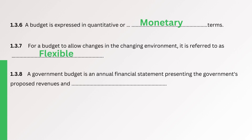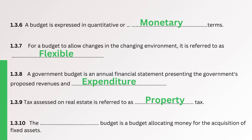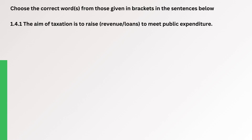Question. A government budget is an annual financial statement presenting the government's proposed revenues and expenditure. The correct answer is Expenditure. Question. Tax assessed on real estate is referred to as Property tax. The correct answer is Property. Question. The Capital budget is a budget allocating money for the acquisition of fixed assets. The correct answer is Capital. The aim of taxation is to raise Revenue to meet Public Expenditure. The correct answer is Revenue.